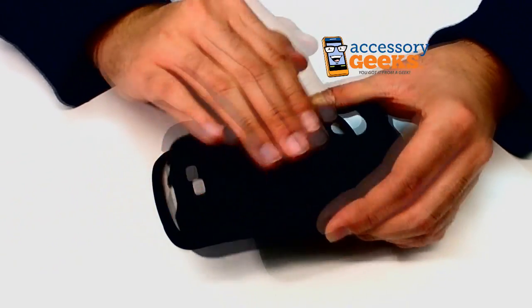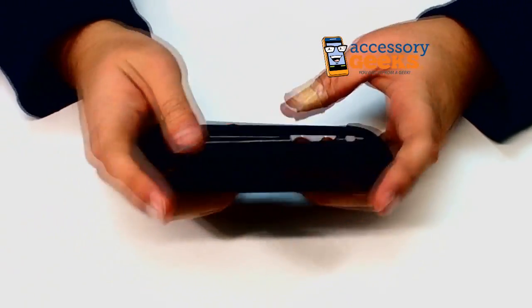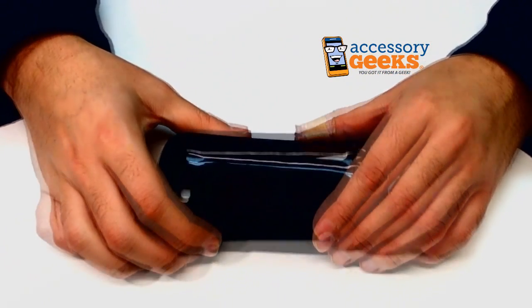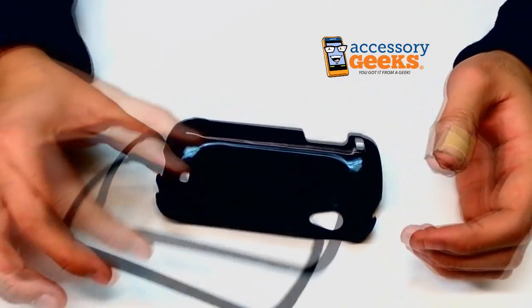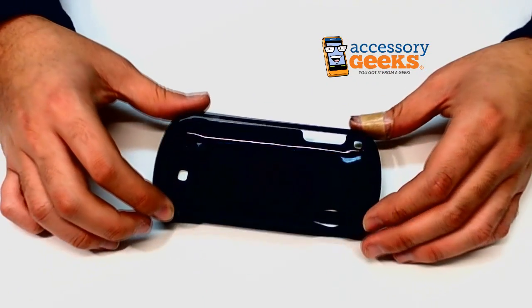It is rubberized so it has I believe it's silicone coating. Very thin but it feels nice in the hands. Nice and soft. It kind of gives it a little bit more grip so it won't be slipping out of your phones when you rapidly flip up the screen and start texting furiously.